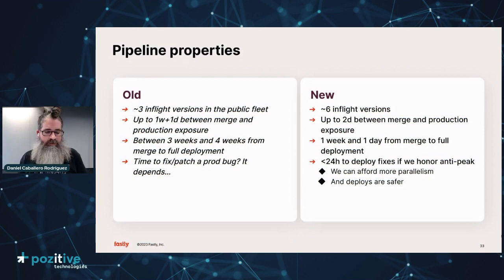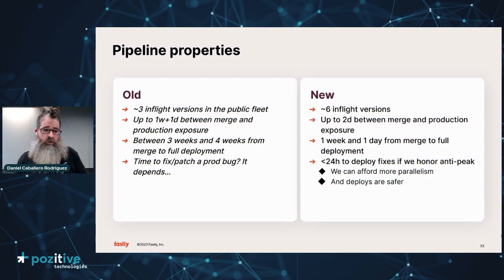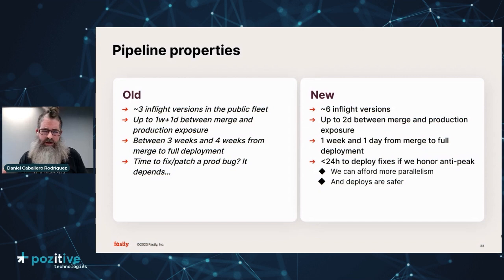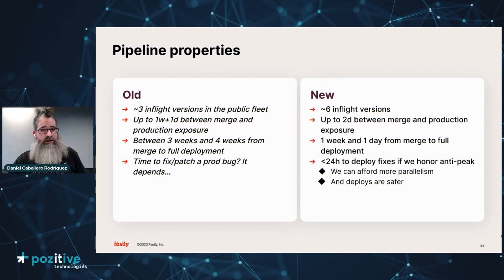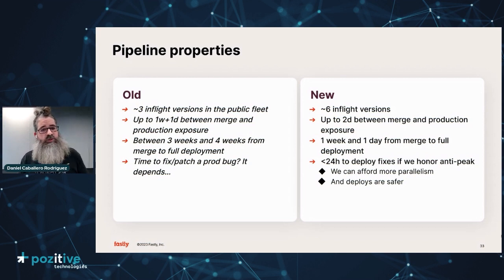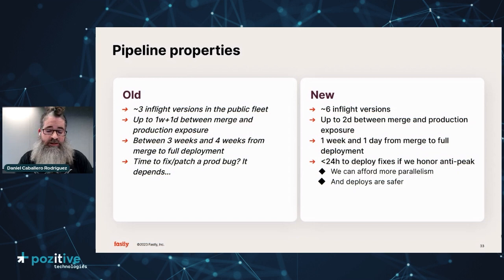The old pipeline used to have like three in-flight executeed versions across our fleet. With the new pipeline — where we cut releases more often — we have up to six in-flight versions, but we cut a release every day. In the worst case, if you merge new functionality on a Friday, you'll deploy or expose that functionality to the production fleet the following Monday. And you can use the same deployment strategy for urgent hotfixes, because we get the capacity to upgrade the entire fleet in 24 hours.